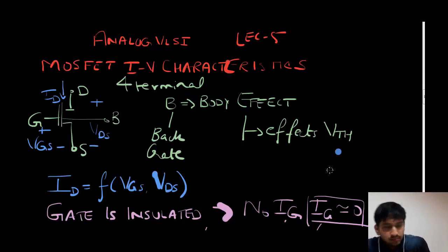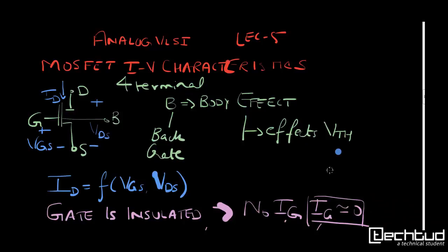In today's lecture 5, we are going to discuss MOSFET IV characteristics. As you know, MOSFET is a four-terminal device which has gate, source, drain, and body. Body generally defines the threshold voltage. ID is a function of VGS and VDS.